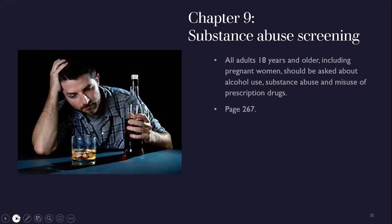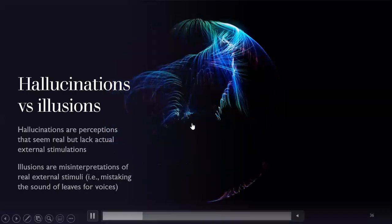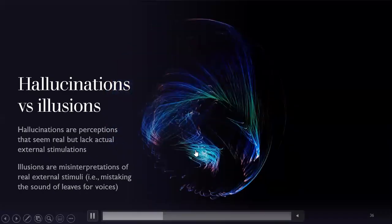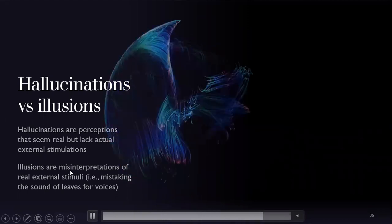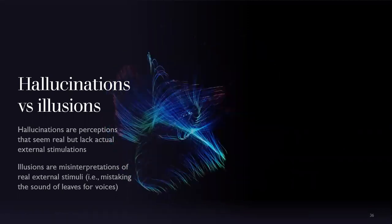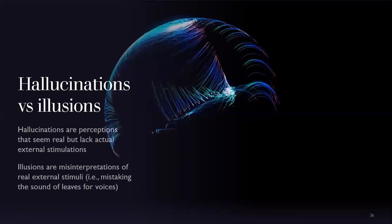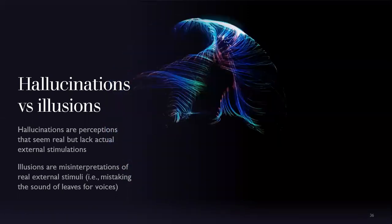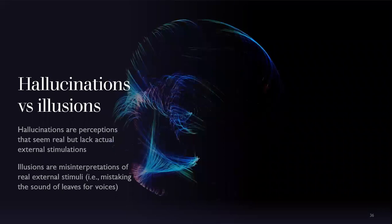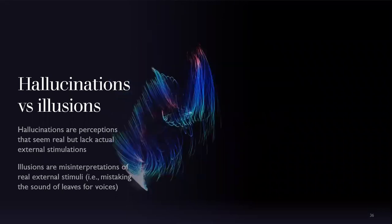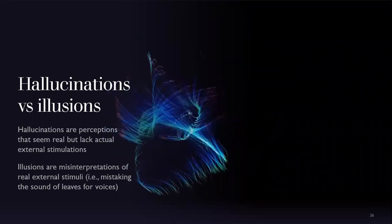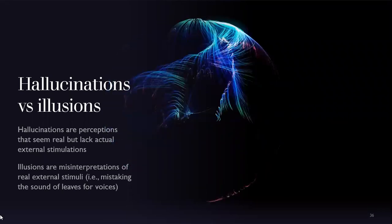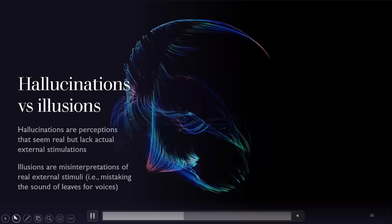Hallucinations versus illusions: hallucinations are perceptions that seem real — seeing pink elephants on the wall. Illusions are misinterpretations of real external stimuli.